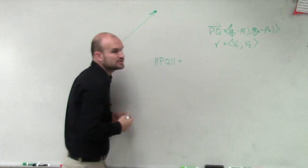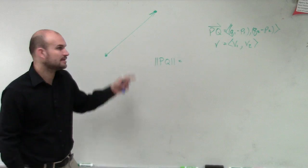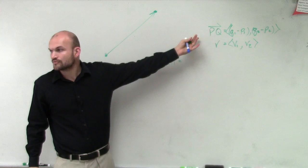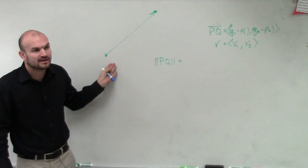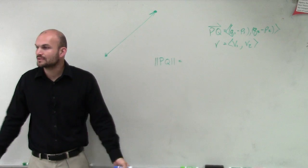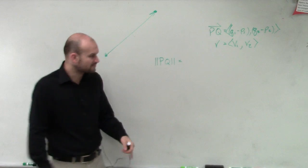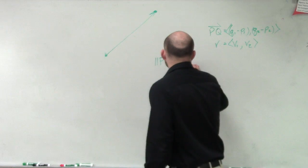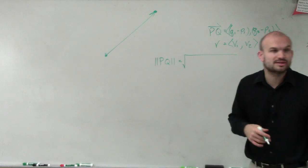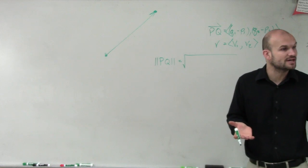So to find the magnitude of PQ, we're going to apply the distance formula. If you want to find the distance between two points in geometry, we apply the distance formula. Well, with a vector, if I want to find the distance from my initial to my terminal side, I still have to apply my distance formula. So the distance formula is going to be the square root, and then it's going to be the change in x's squared plus the change in y squared.